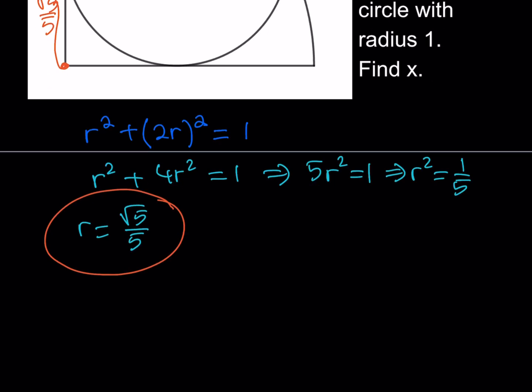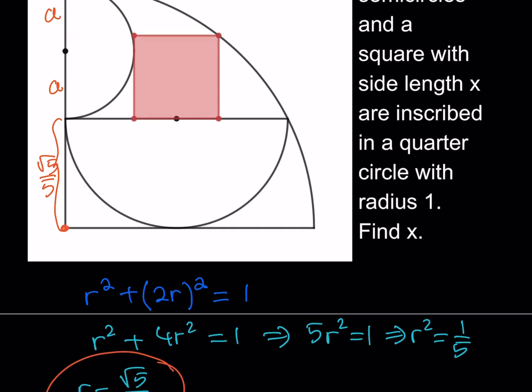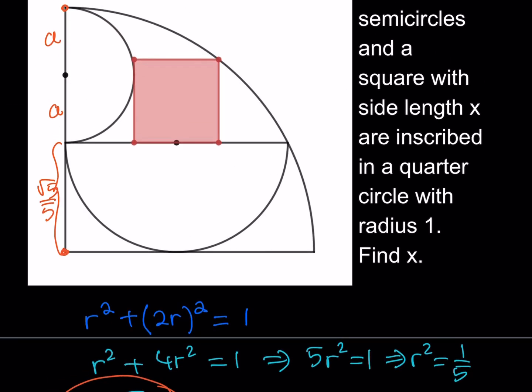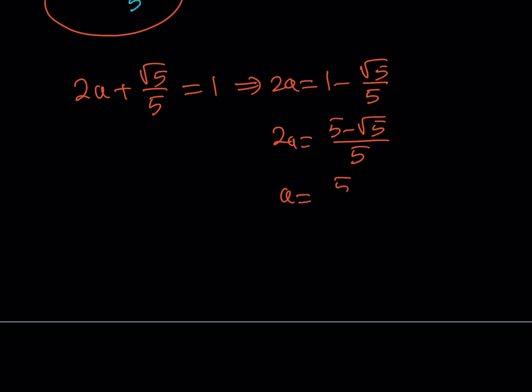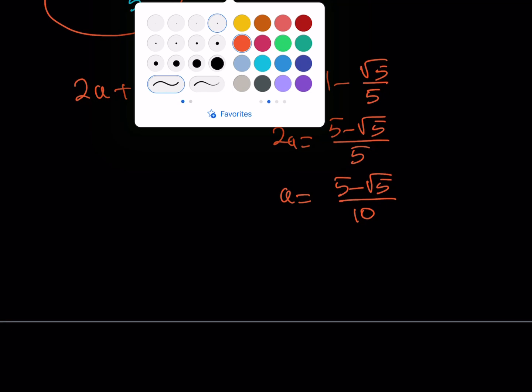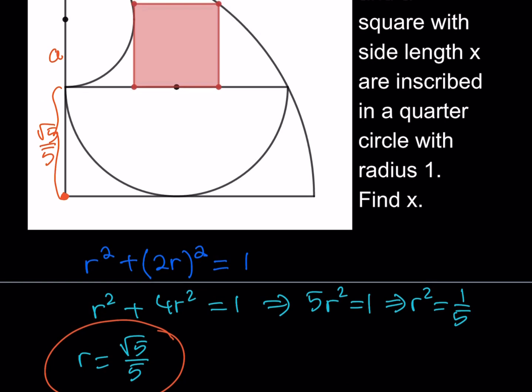Let's go ahead and write that down. 2A plus root 5 over 5 is equal to 1, which is the radius of the quarter circle between this point and that point. Wow, that was easy. Now we can subtract root 5 over 5 from both sides first, then make a common denominator. That's going to be 5 minus root 5 over 5. Then divide both sides by 2, which is multiply the denominator. So A is going to be 5 minus root 5 over 10. That is my radius for the smaller semicircle. Awesome, I got that too.